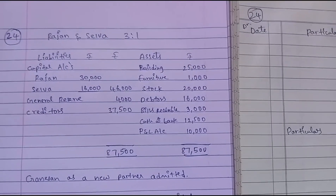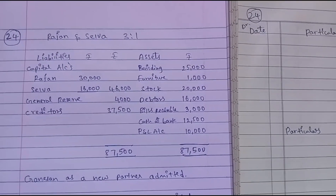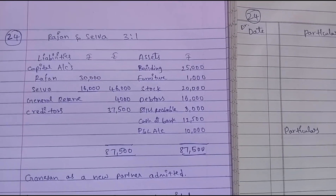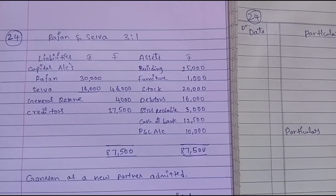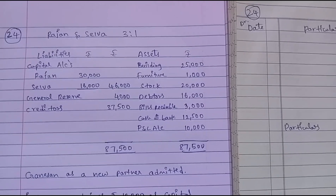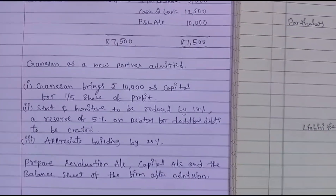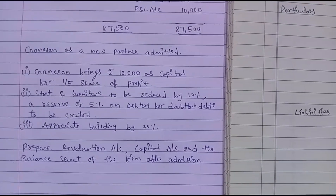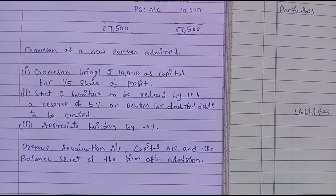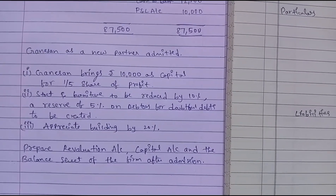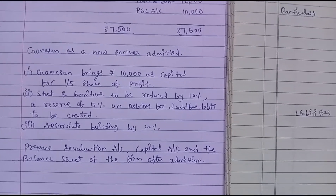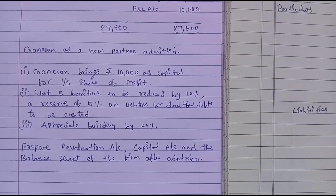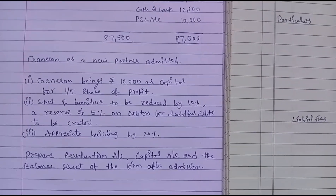Hi friends, in this video we cover Chapter 5 Admission of Partners, Exercise 24. Rajan and Selva are partners in a 3:1 ratio. New partner Ganeshan is being admitted. He brings 10,000 capital and a 1/5 share of profit. Stock and furniture are reduced by 10%, a reserve is to be created for 5%, and the building is appreciated. We will prepare the revaluation account, capital account, and balance sheet after admission.